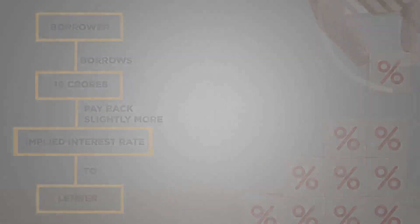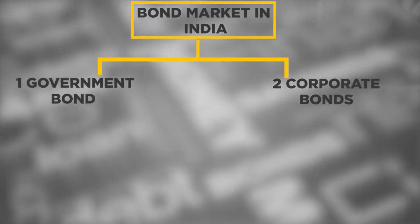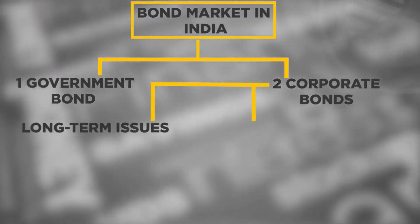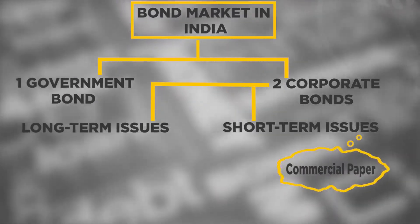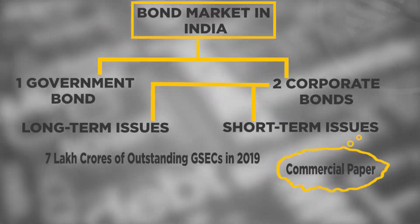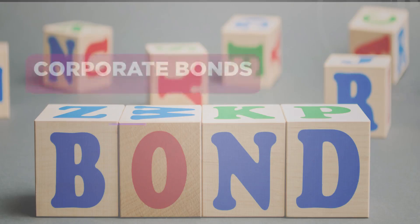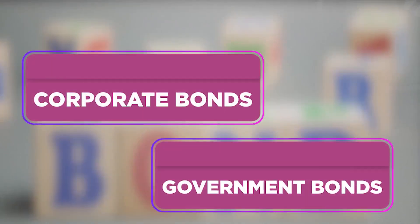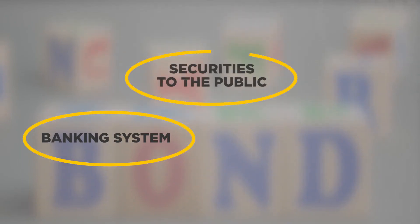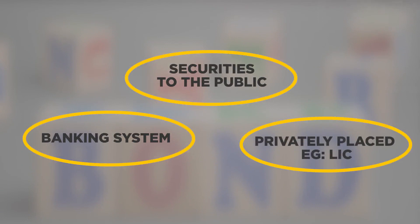The second and smaller segment of the bond market in India is corporate bonds. Just like government bonds, these have long-term and short-term issues. The short-term issues are known as commercial paper. It is a smaller segment — only about 7 lakh crores of these are currently outstanding, compared to 58 lakh crores in the GSEC market. Regardless of whether it's corporate or government bonds, issuers get their funds either directly from the banking system, by issuing securities to the general public, or by placing them privately with large financial institutions like the Life Insurance Corporation of India.